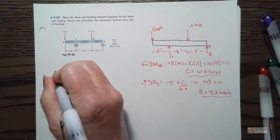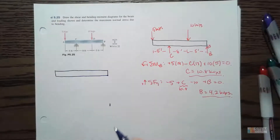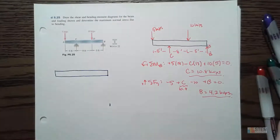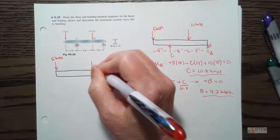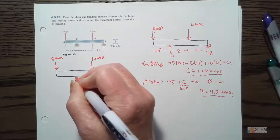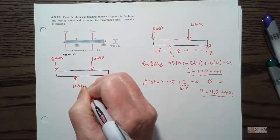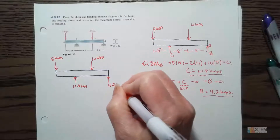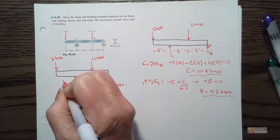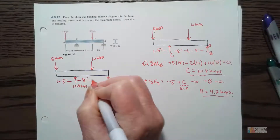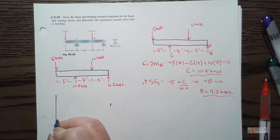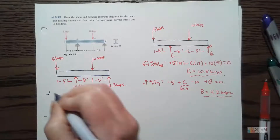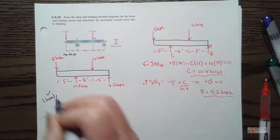When we do these shear and moment diagrams we always want to draw out another free body diagram on top of where we're going to draw them, so we can line everything up and see what's going on. We've got five kips, ten kips, and the support forces: 10.8 at C and 4.2 kips at B. We definitely want to put our distances on this one — obviously this isn't to scale. Units here will be kips.